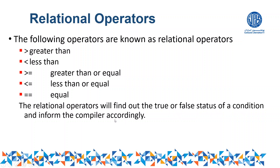Relational operators find out the true or false status of a condition and inform the compiler accordingly. Any condition using relational operators will be evaluated to either true or false, and the compiler will execute statements accordingly. We are going to use these relational operators in the if statement or if-else statement, which will be discussed in the next lecture. These operators are also called comparison operators, because we compare whether one number is greater than, equal to, or less than another.